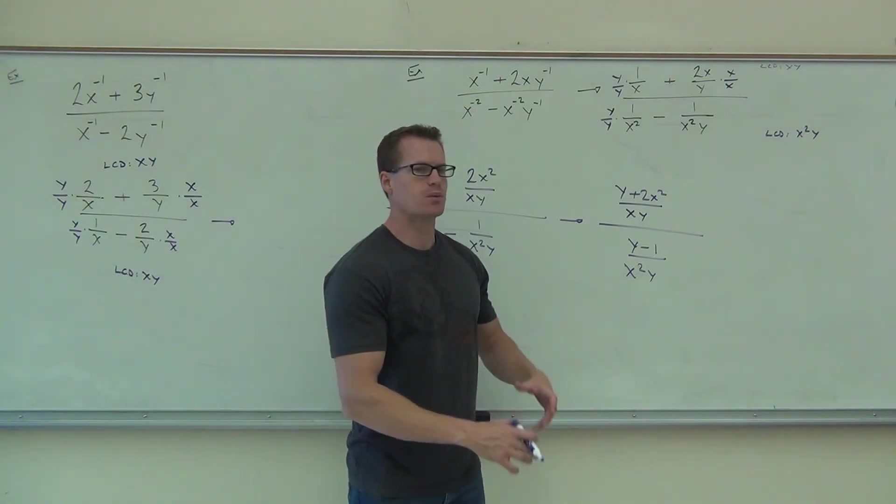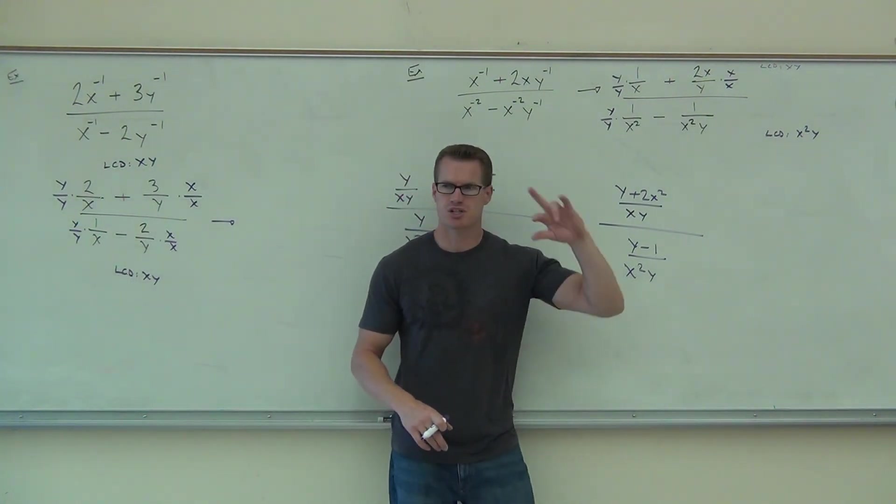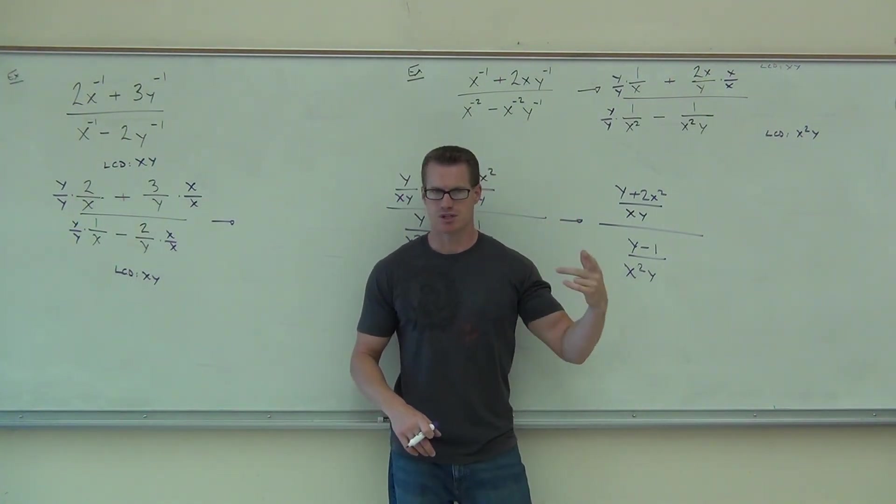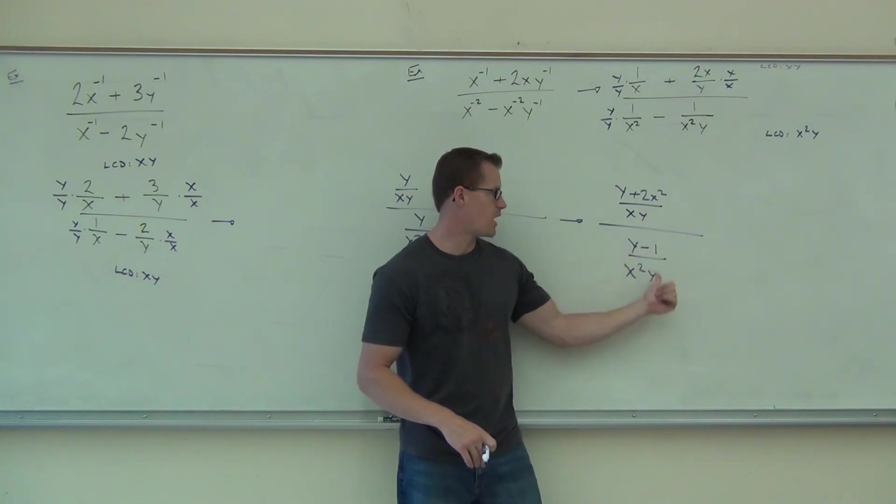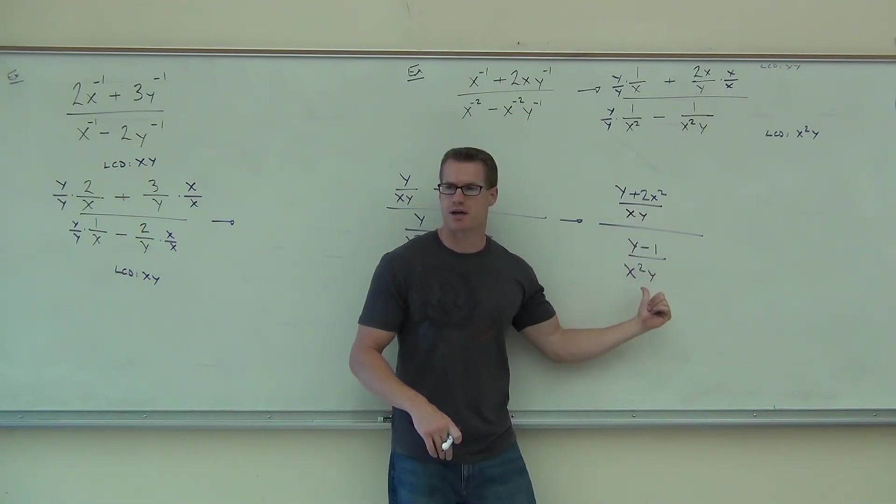From here on out, you have your division problem. We would set up division. We'd reciprocate the second fraction, and you would simplify. Are you starting to see the things you're going to be able to simplify in this case? I mean, when you do this, you're going to simplify the y and the y, one x with x squared. That's what you're going to have out of this.